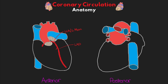Coming down the LAD, the first branch is our first septal perforator branch, followed by many more septal branches off the LAD. These basically perfuse the interventricular septum. Coming off the other side, we have our first and second diagonal branches — we'll have at least two of these, but potentially many more — and these go out perfusing the anterior lateral segments of the left ventricle. The LAD then comes down and wraps around the apex, perfusing some distal apical segments.